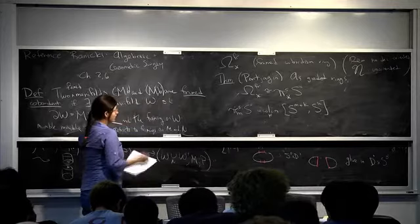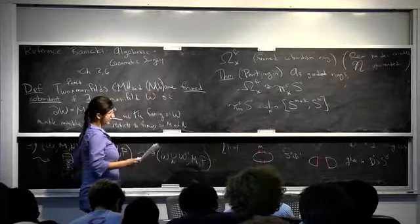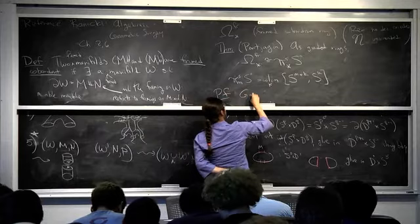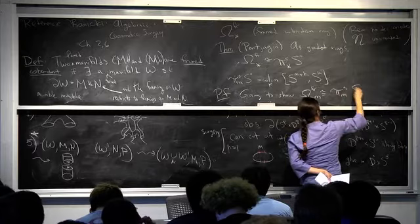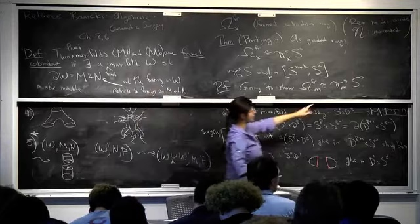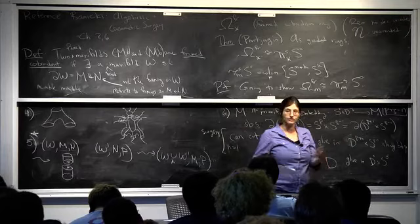The goal for today is to prove this theorem, ignoring the ring structure. We're going to show that the m-dimensional part of the framed cobordism ring is the same as π_m^stable(S^0). If you're willing to take the Freudenthal Suspension Theorem into account, take a really big k — you don't even need to remember how big — and then the point is that if k is big compared to m, making it bigger doesn't change the group.